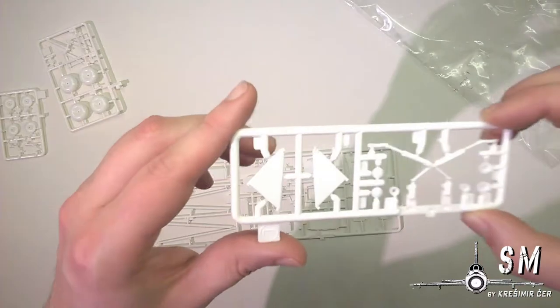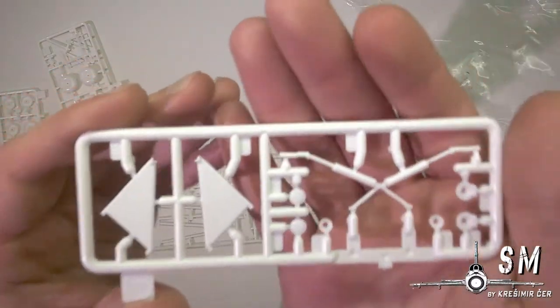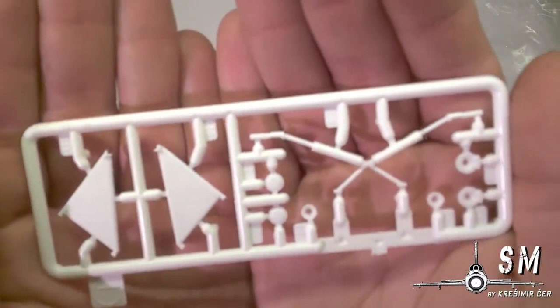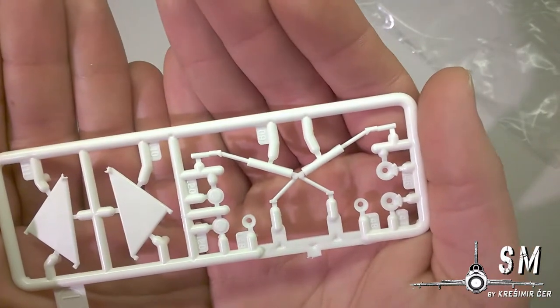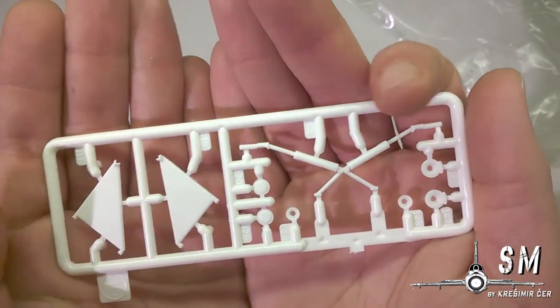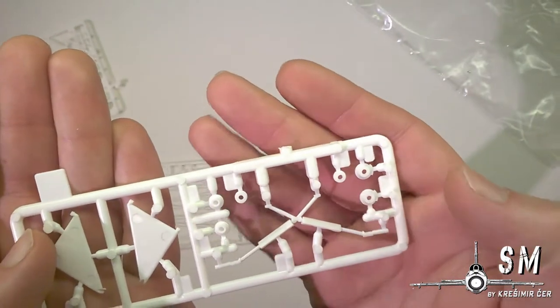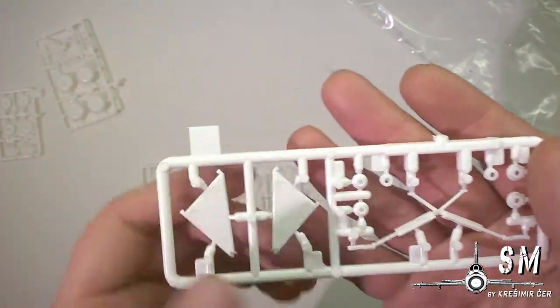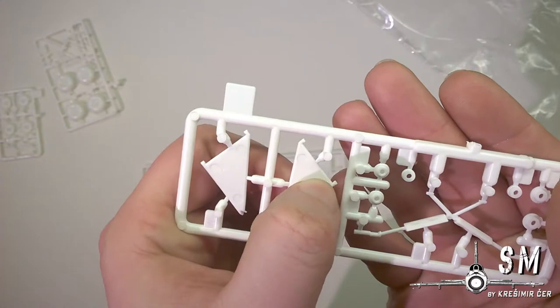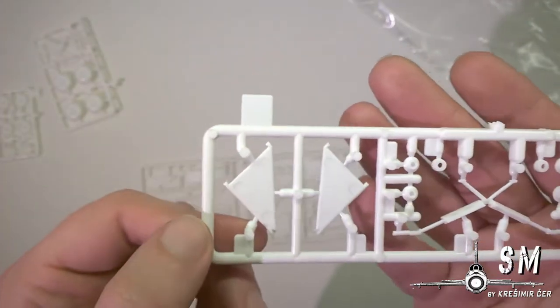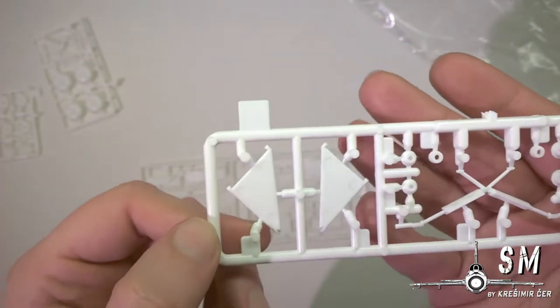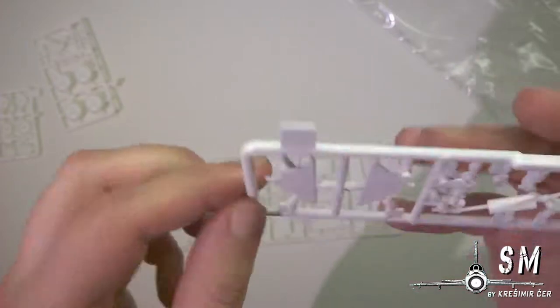Then we have also our landing gear struts with brakes here, and some nasty ejector pins, but it is a flat surface so it will be easy to fill.